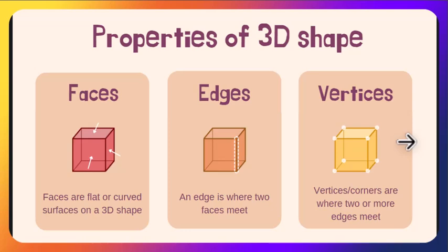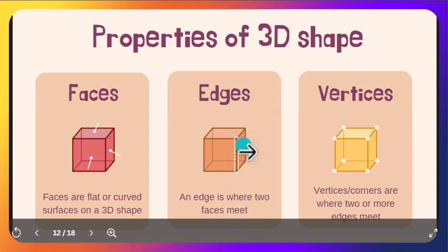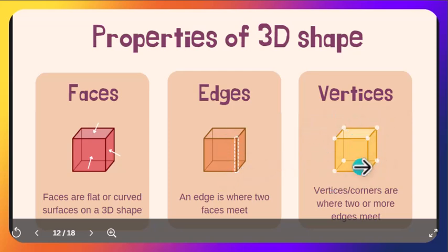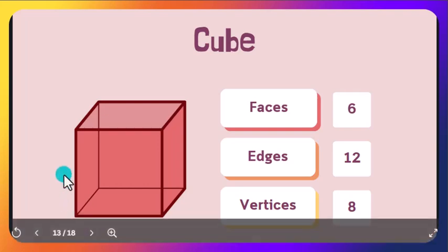Faces are flat or curved surfaces on a 3D shape, as you can see. Edges are where two faces meet — as you can see, this is called an edge. And vertices are the points, the corners, of a shape.